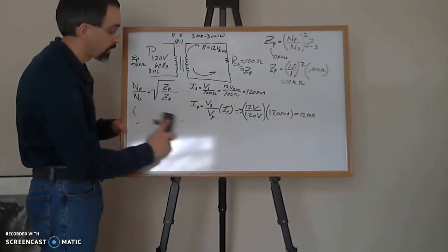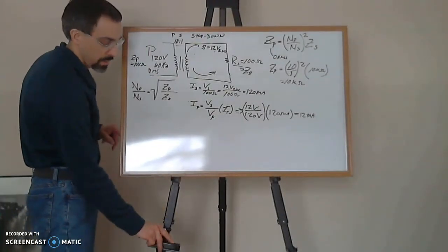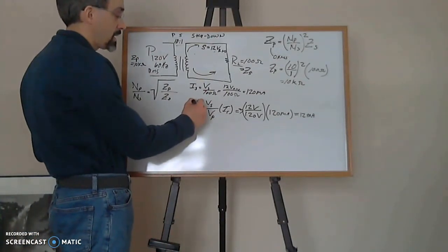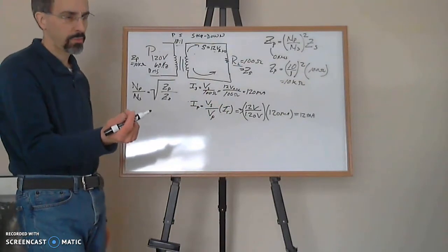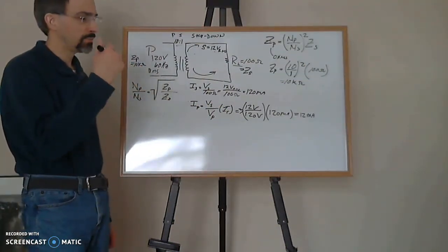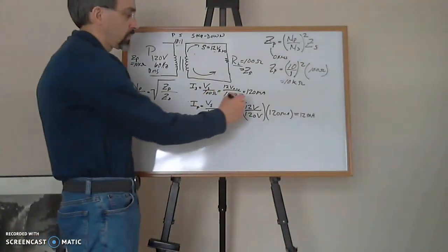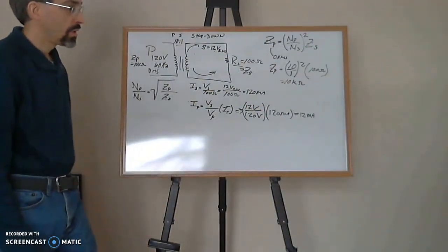Now I want to find Ip. Ip equals Vp times Is. Remember the equation I talked about in the past where Is over Ip equals Vp over Vs. So that's 12 volts times 120 milliamps divided by 120, which gives me 12 milliamps of current.